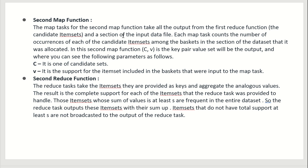In the second reduce function, the reduce task receives item sets as keys and aggregates the corresponding values. The result is the complete support of each item set that the reduce task was provided to handle. Those item sets whose total support value is at least s are frequent; item sets that do not have total support of at least s are not broadcast to the output of the reduce task.